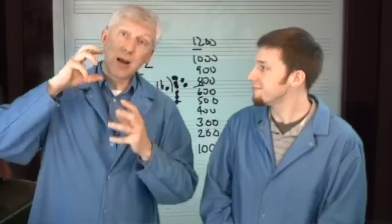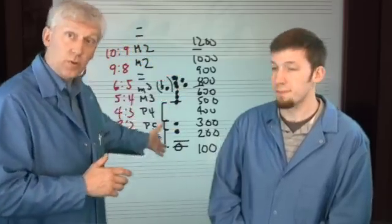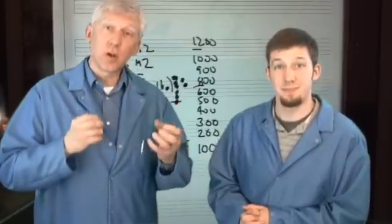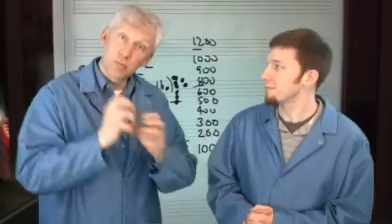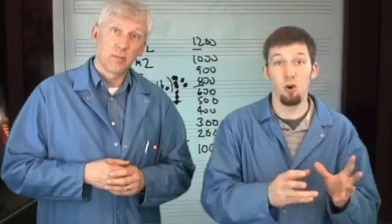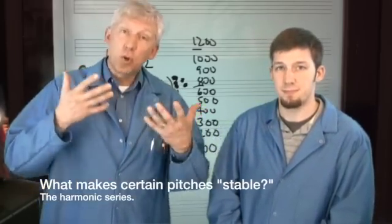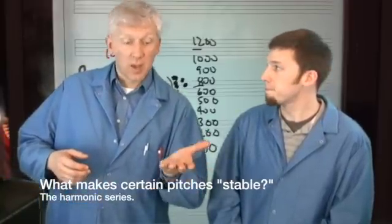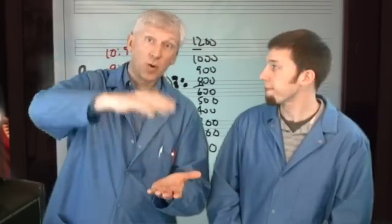There are certain unstable notes that resolve to stable notes. Guess what the stable notes are — they're part of the overtone series. What is the language of music? Conflict and resolution. Unstable pitches resolve to stable notes. What's the story or plot of music? Music leaves home and it comes back. And what we've talked about is what creates those stable pitches. You start with a note, whatever that note might be, and there are stable pitches that are naturally part of the overtone series.